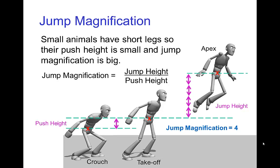Jump magnification is the ratio of how high you jump to the distance that you push off when you push off from the ground from crouch to takeoff. Small animals have short legs, and since they all jump to about the same height, the jump magnification tends to be large for small animals. It's unusual for a human to have a jump magnification as large as four, as in this figure. But for a small animal like a cat, a jump magnification of four or even more would not be so unusual.